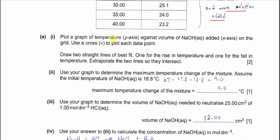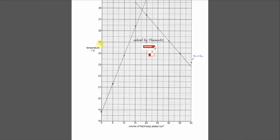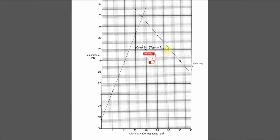Part a1: plot a graph of temperature on the y-axis against the volume of sodium hydroxide added on the x-axis. After that, draw two straight lines of best fit — one for the rise in temperature and another for the fall in temperature. Both must be extrapolated so they intersect. The best fit line passes through as many plots as possible in a balanced way.